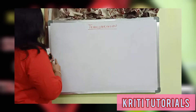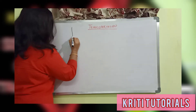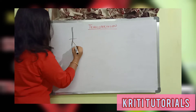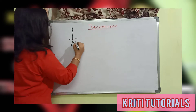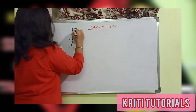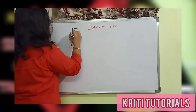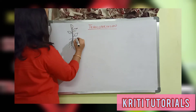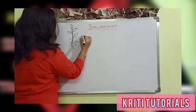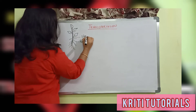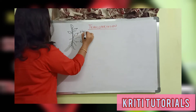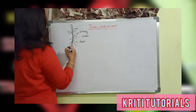As we all know, if we are taking the structure of a plant, we have learned in our lower classes that the plant consists of many parts. Parts of the plant include root and shoot. In the shoot system, we have leaves and branches.